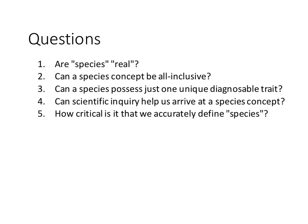So are species real? Scientists have tried to figure out whether it's a real thing or just something we invented linguistically. There are lots of definitions of species, and one of the reasons this is important is that people get really confused when talking to each other about species when they don't first define what species concept or definition they're using. A lot of biological arguments and debates focus on: what are you talking about when you say you're working with two different species? Because I would consider those two different populations, and people get really into this sort of argument.